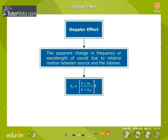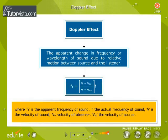Doppler effect gives the apparent change in frequency or wavelength of sound due to relative motion between source and the listener. The apparent frequency is given by the equation f1 equals (v ± vo)/(v ± vs) × f, where f1 is the apparent frequency of sound, f the actual frequency of sound, v is the velocity of sound, vo velocity of observer, vs the velocity of source.